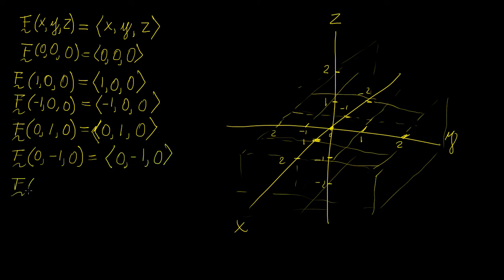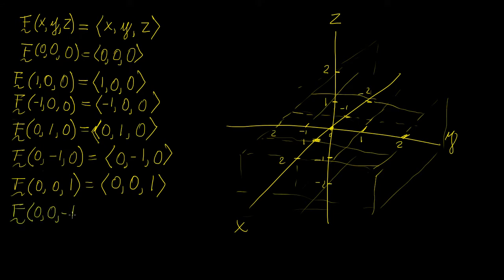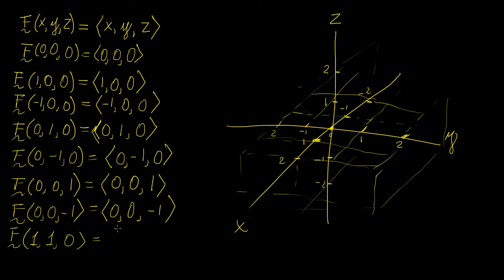Now let's mix it up and do the z-axis. So you're going to have (0, 0, 1), which gives you a vector with component zero in x and y, and one in the z direction. Then let's do minus one in the z direction: (0, 0, -1). And then let's do a couple of mixed ones — so let's do (1, 1, 0) and then (1, 0, 1).